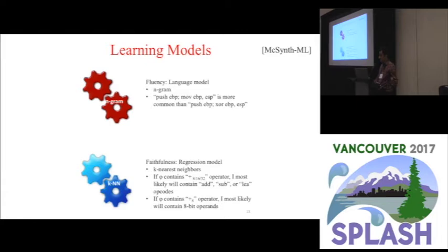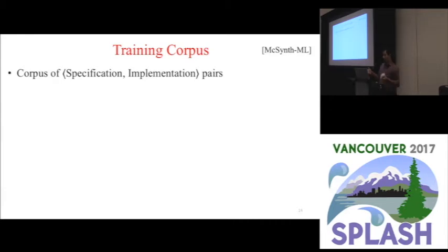But your second intuition might be that, of course, the instructions we want should depend somehow on our formula. To draw again an analogy to natural language, we call this property faithfulness. We want our fluent English to actually be a faithful translation from the original. So in this analogy, think of the instruction sequence as being translated from the original QFBV formula. For this, we use a regression model that gives us a probability over how likely an instruction is to occur in the synthesized sequence. Our training samples here would constitute basically sets of specification implementation pairs. Now, you might ask yourself, if synthesis is difficult, where can we find such a corpus?